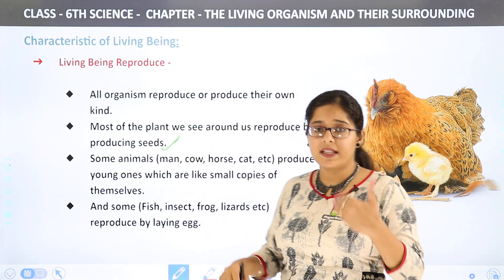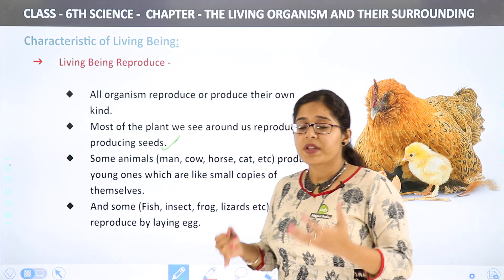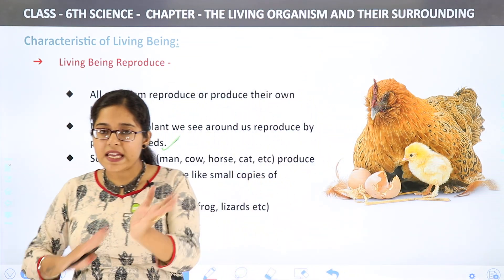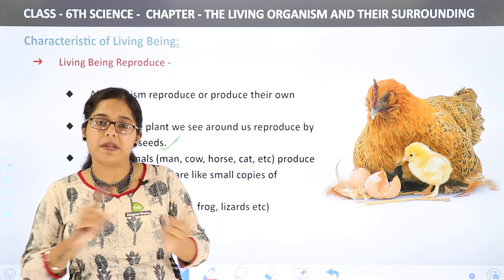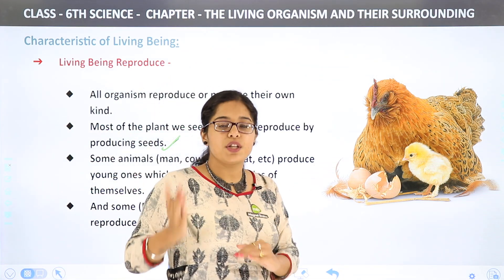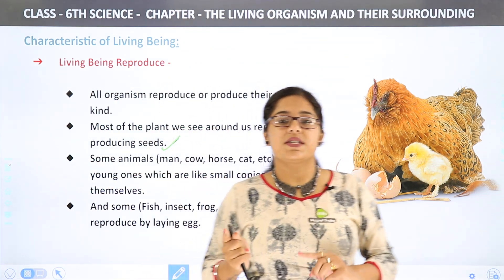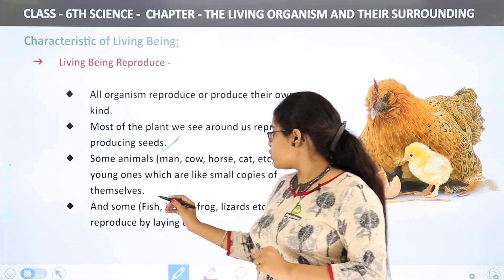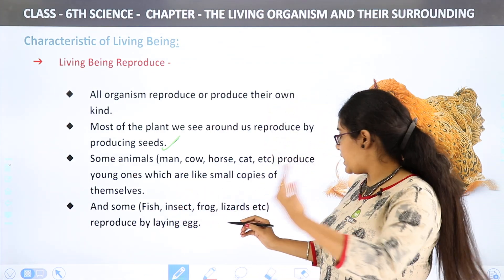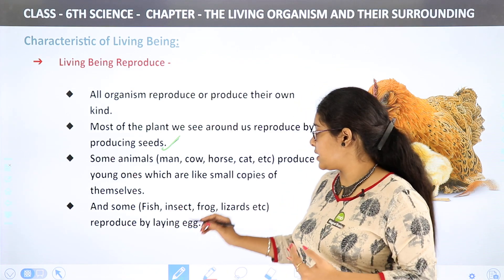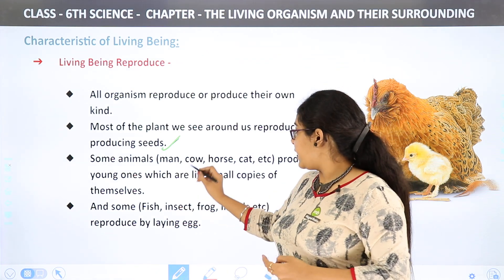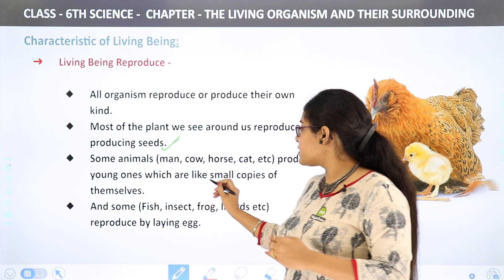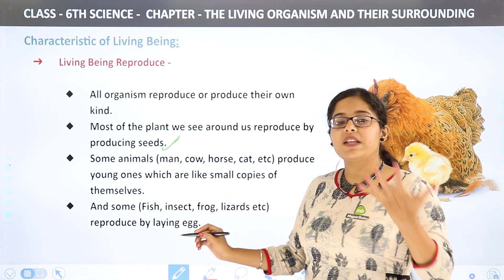If I talk about some animals — like man, cow, horse, cat — they produce young ones which are small copies of themselves. The cow produces a living being like itself, and this process is known as reproduction. Human beings can produce their own copy, and animals like man, cow, horse, and cat produce young ones which are small copies of themselves.